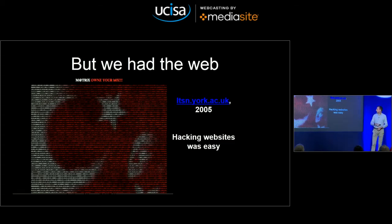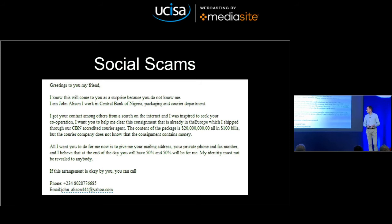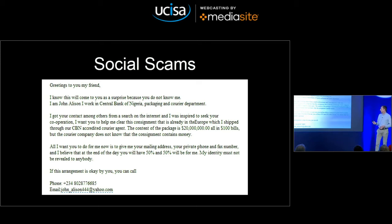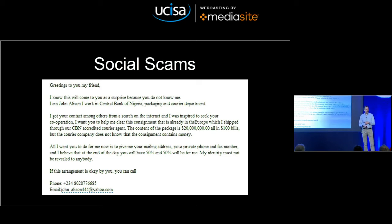The attacks shifted. We got the social scam. An example: 'I know this will come as a surprise because you do not know me. I am John Allison. I work in the Central Bank of Nigeria, a packaging and courier department. The content of the package is $20 million all in $100 bills.' These 419 scams made lots and lots of money. They haven't gone away because people got less gullible — they've gone away because our email providers filter them as spam.